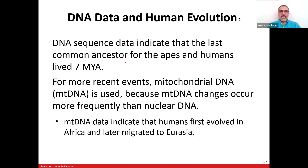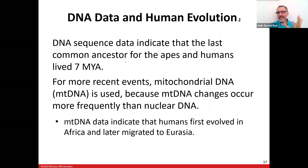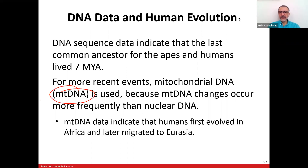DNA sequence data indicates that the last common ancestor of apes and humans lived about 7 million years ago. Mitochondrial DNA (mtDNA) is useful because it changes more frequently than nuclear DNA. mtDNA evidence indicates that humans first evolved in Africa and later migrated to Eurasia. This is very important to know.